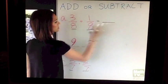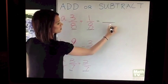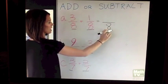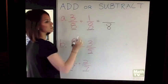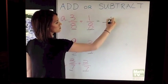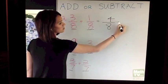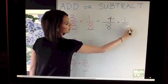When adding fractions, we keep the denominator the same. We keep it as an 8 and then we add the numerators. 3 plus 1 is 4 and then this can reduce to 1 half.